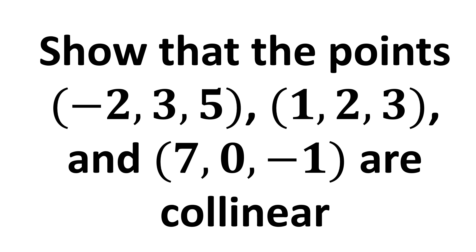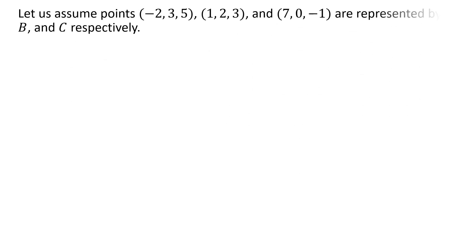In this video, we learn to show that points are collinear. Before solving the problem, let us name the given points. So, let us assume the points (-2, 3, 5), (1, 2, 3), and (7, 0, -1) are represented by A, B, and C respectively.